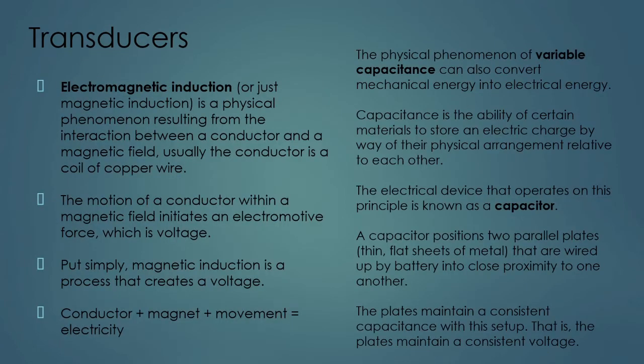Electromagnetic induction, or just magnetic induction, is a physical phenomenon resulting from the interaction between a conductor and a magnetic field. Usually the conductor is a coil of copper wire. You pass a coil of copper wire through a magnetic field and you'll get electricity, or what's called an electromotive force — which is voltage, or the potential for the water-like flow of electrons known as electricity. Put simply, magnetic induction is a process that creates a voltage: magnet plus conductor plus movement equals electricity.